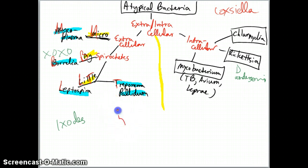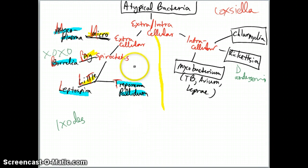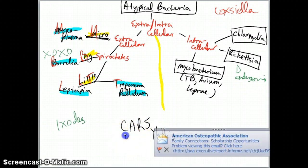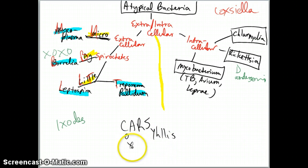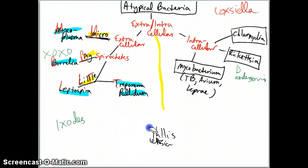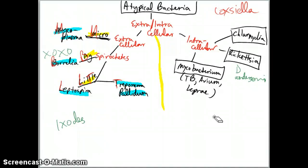With syphilis, you're also going to have a palmar rash on the palms and soles of the feet. If you see someone with a rash on the soles of their feet or palmar rash, think syphilis, Coxsackie A virus, or Rickettsia - those are your three causes of palmar/plantar rashes. You can diagnose syphilis with rapid RPR (rapid plasma reagin), VDRL, or FTA-ABS, but the main one you'll see is dark-field microscopy.